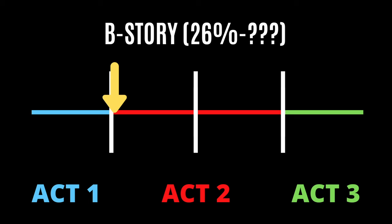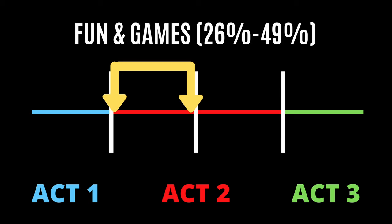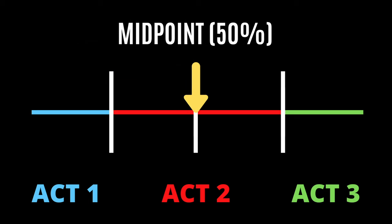Step seven is the B story — a subplot, usually either a romantic subplot or a mentor subplot, where the main character learns and starts changing through their interactions. Step eight is the fun and games, about 25% of the story, where the hero goes through challenges, meets new people, and interacts to solve problems. Step nine is the midpoint — usually a false victory or false defeat — where the stakes are also raised.